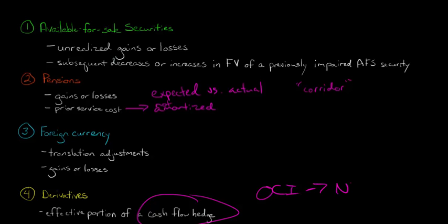So these aren't all the different types of things that could affect other comprehensive income, but if you look at the financial statements, these are the most common. You'll see other things — like with pensions, for example, you might see something like transition assets or obligations. Those are things that are remaining from the initial application of Statements on Financial Accounting Standards 87 and 106. So there are different things that you might see, but this will give you the main idea of the things you'd see in other comprehensive income.